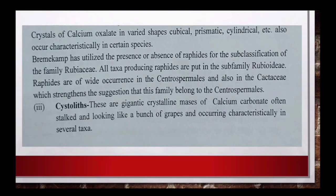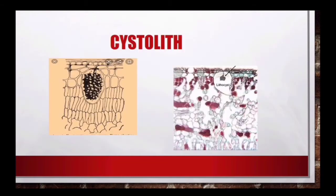Bremekamp ने raphides की presence और absence के आधार पर Rubiaceae family का sub-classification किया था। उन्होंने बताया कि जिन plants में raphides present हैं उन्हें sub-family Rubioideae में रखा। इसी तरीके से Centrospermales और Cactaceae family में भी raphides अधिक मात्रा में पाए जाते हैं। इसी तरीके से cystoliths, यह calcium carbonate के बहुत बड़े-बड़े groups होते हैं जो grapes के गुच्छे की तरह दिखते हैं। Ficus में यह दिखाई देते हैं - ficus leaf का section काट कर देखने पर cystoliths दिखाई देंगे।